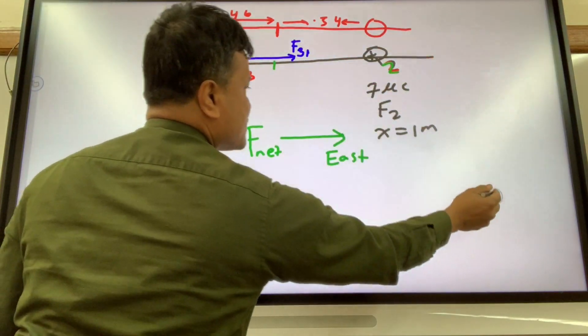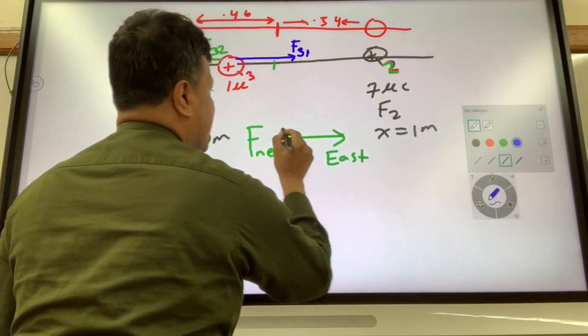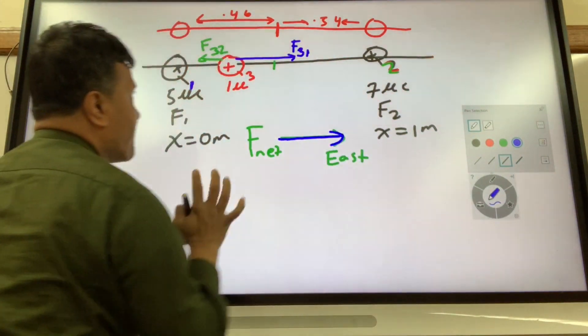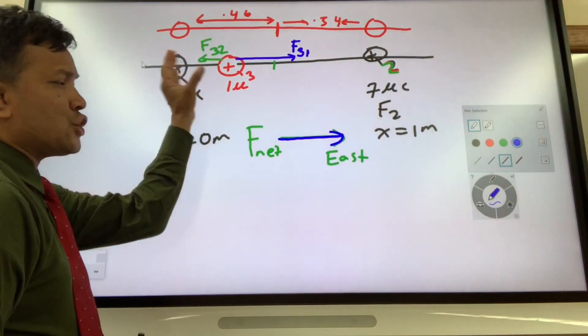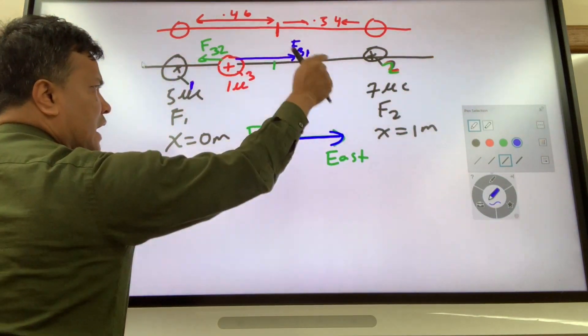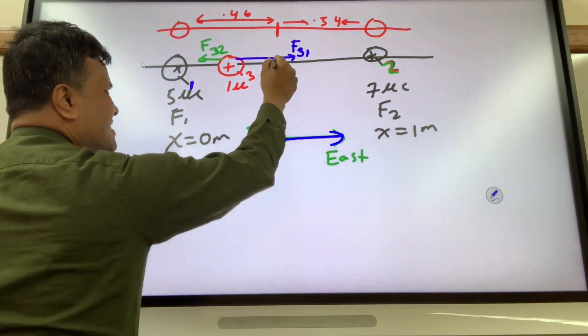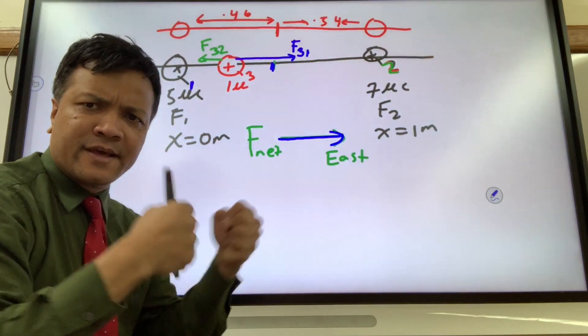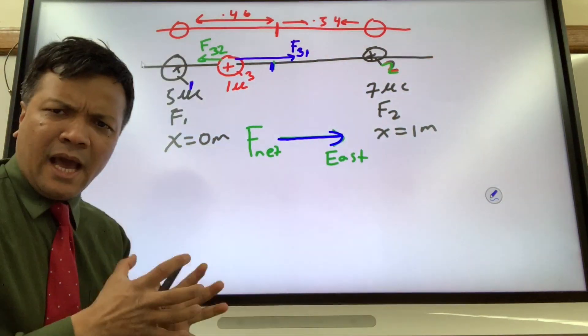Because the net force is acting to the east, as you see the blue is bigger than the green. So the net force is acting to the east, meaning this charge q3 will move to the east direction and will stop over here when the net force is zero.